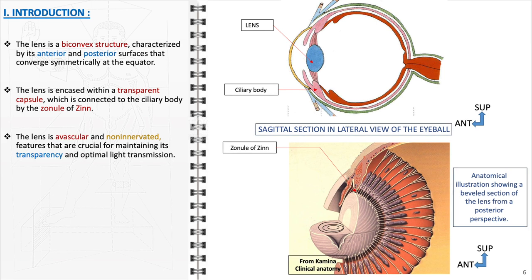Notably, the lens is avascular and non-innervated, features that are crucial for maintaining its transparency and optimal light transmission. Its avascularity prevents the interference of blood vessels with light passage, and the absence of nerves in the lens underscores its singular focus on refracting light without sensory input.